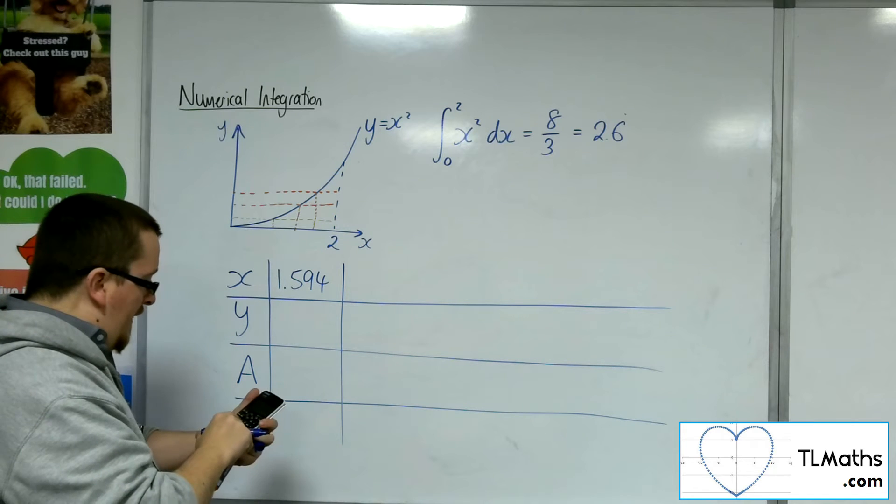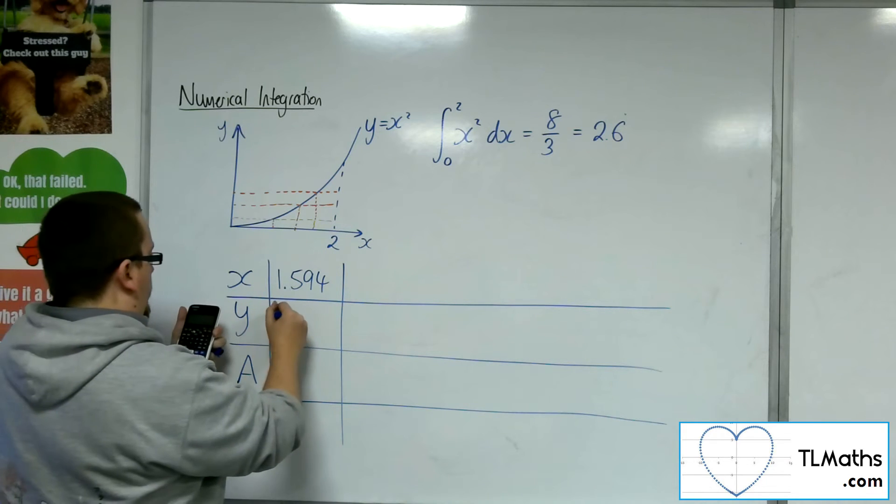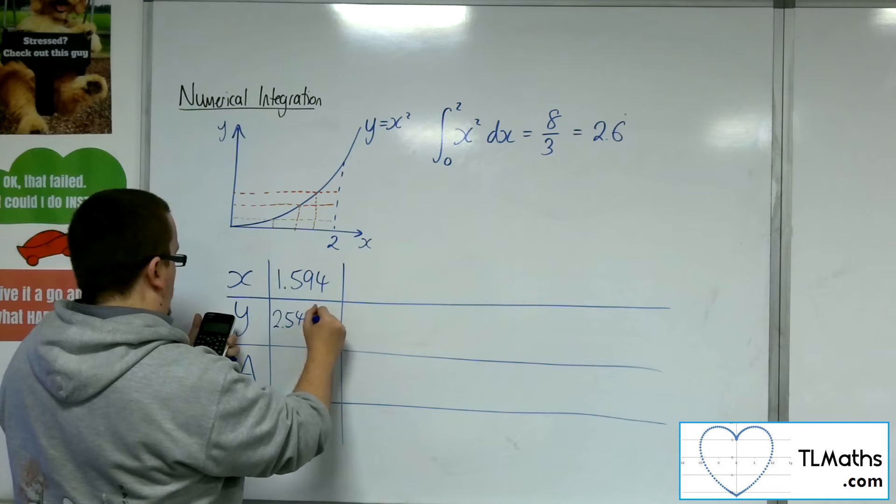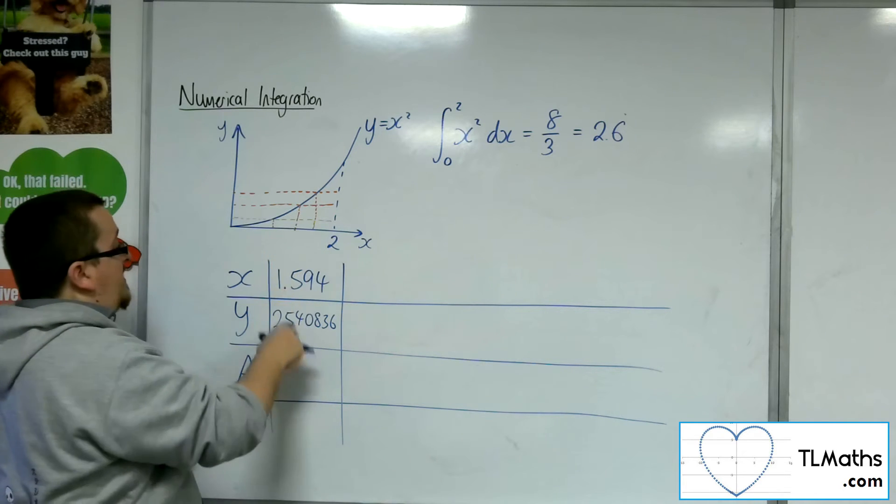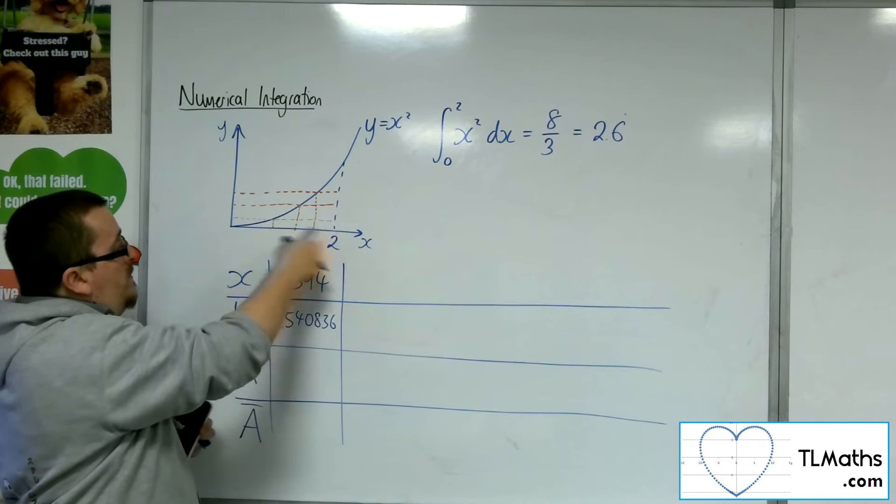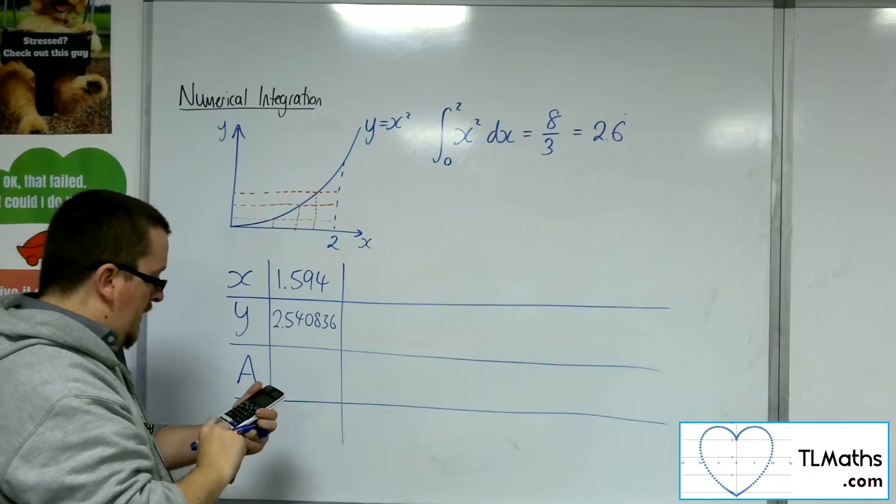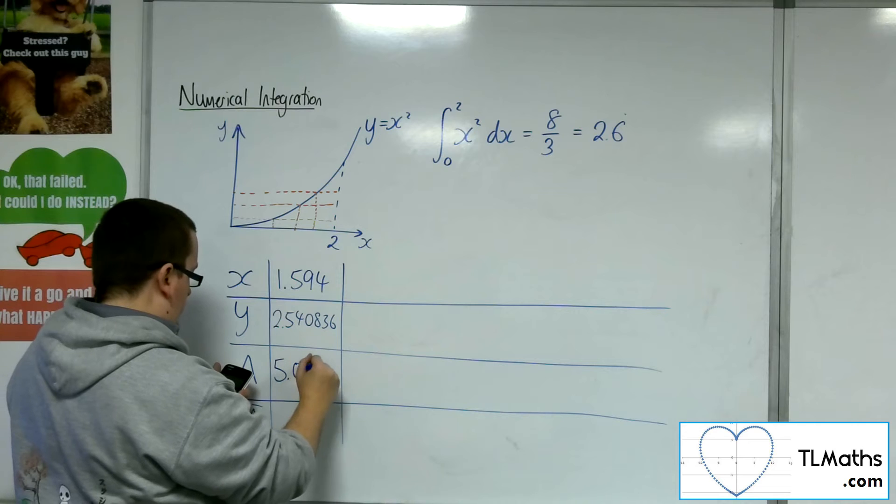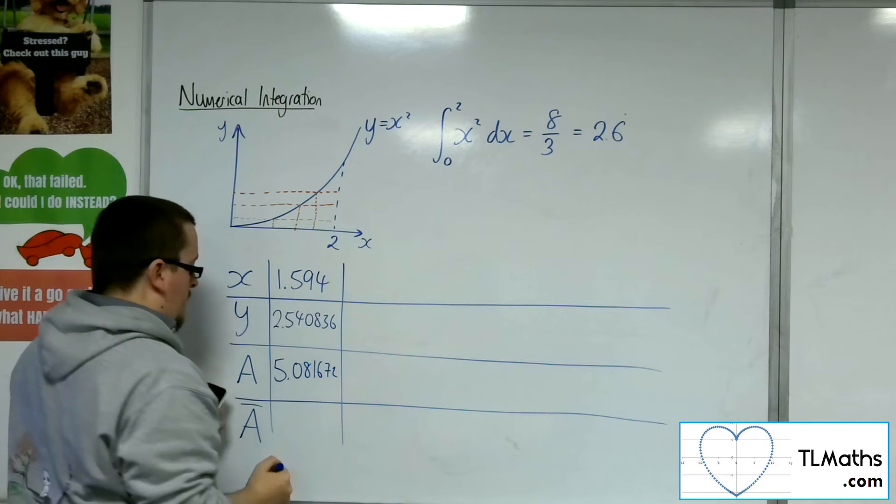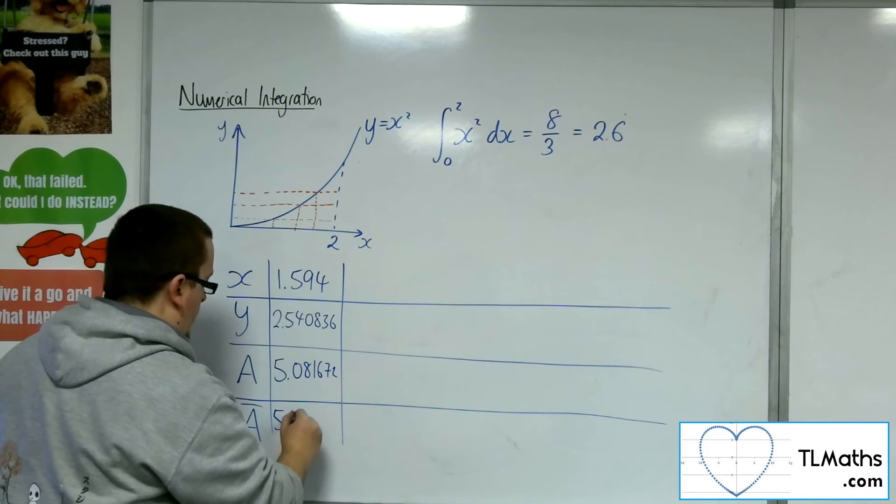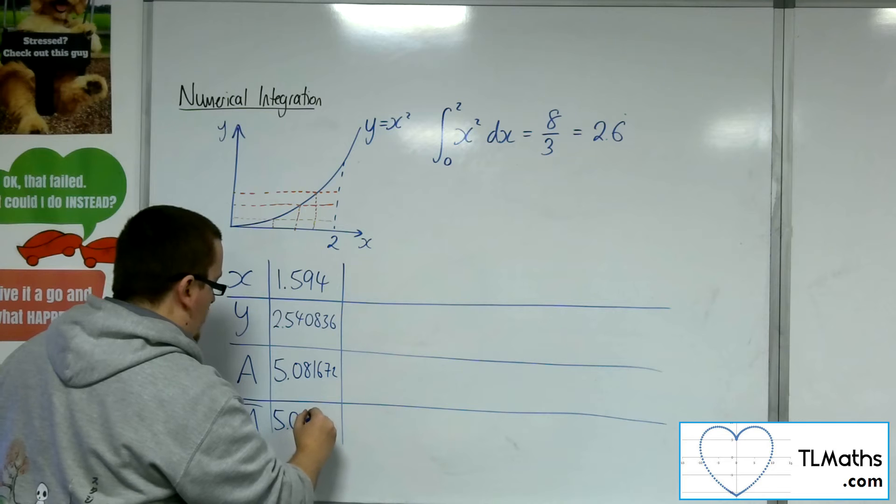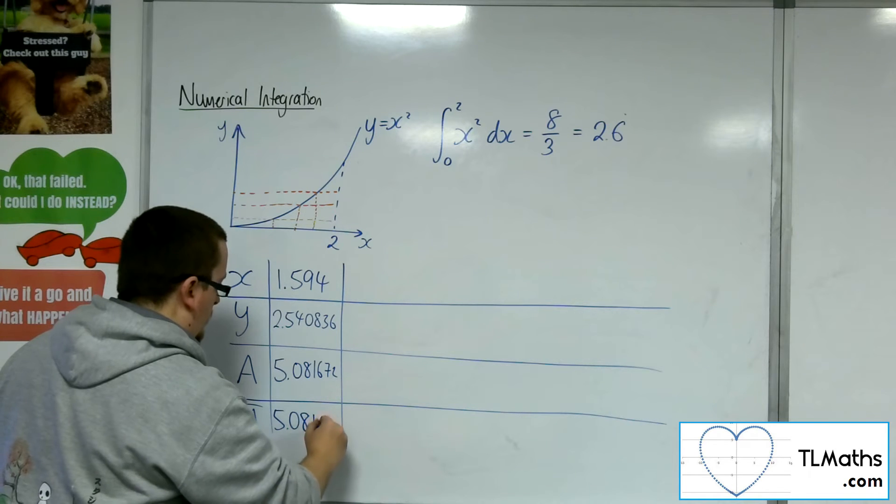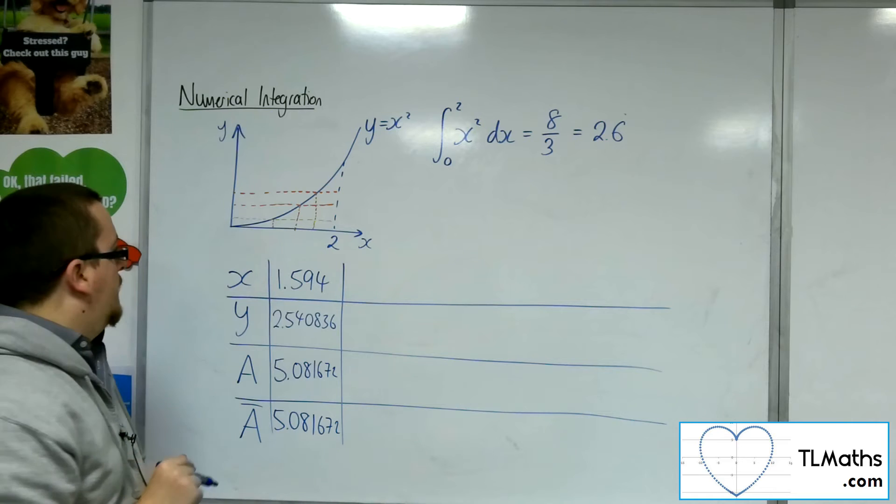So I'm going to square that. That gives me the Y value, 2.540836. I'm going to times that by 2, so that's the height of the rectangle times by 2. And that gives me my first area. So that is my running average.